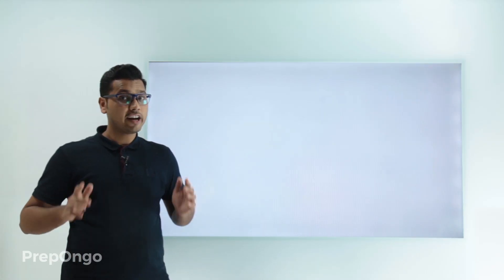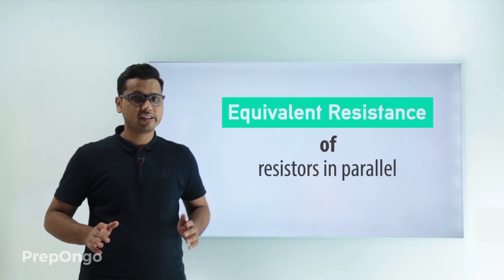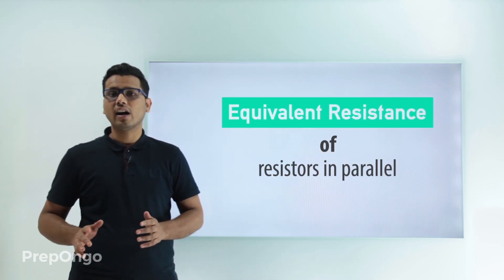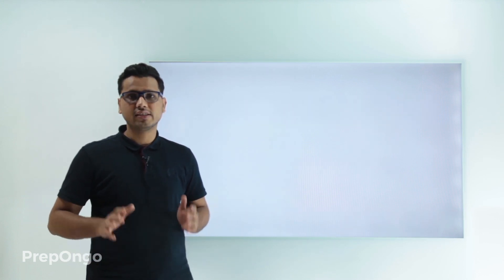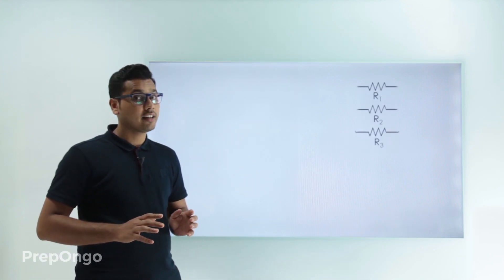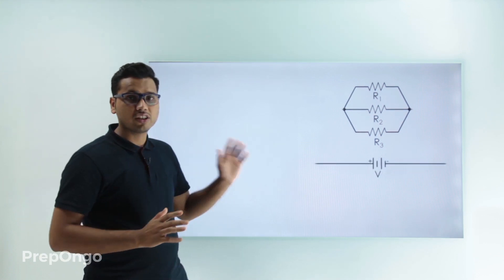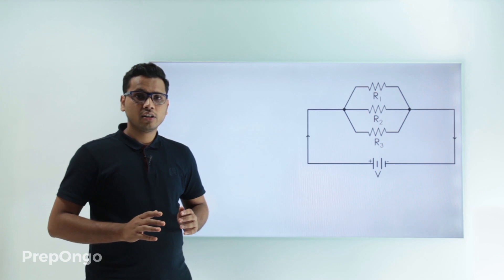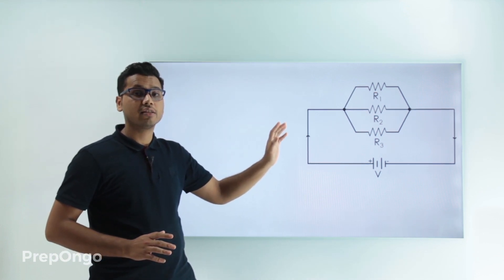Hello everyone. We had understood how to calculate resistance when resistors are in series. Now let's find out how to calculate equivalent resistance when resistors are in parallel. We already know how to connect resistors in parallel — we take the required resistors, connect their ends, and finally connect the ends to the terminals of the battery. This type of arrangement is what we get when resistors are connected in parallel.